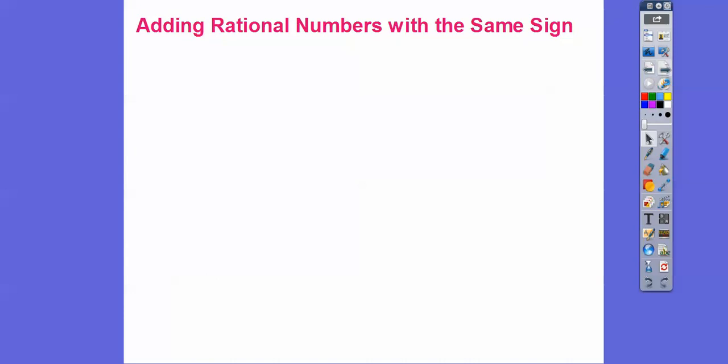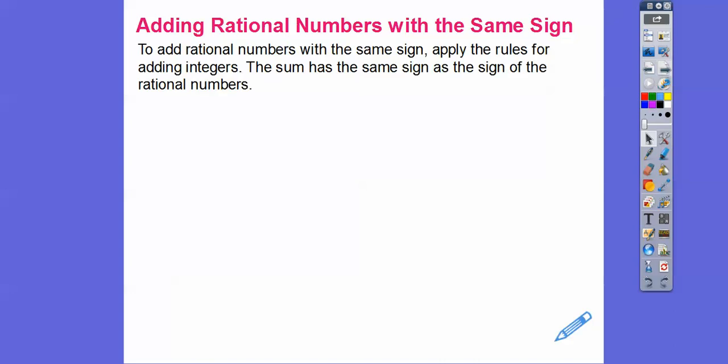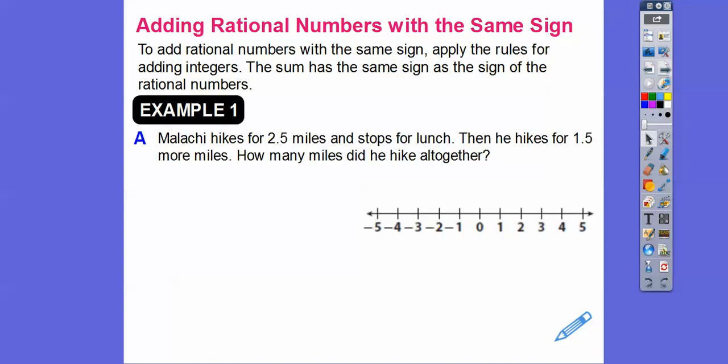Remember, rational numbers are fractions, or in the form of a decimal — a terminating decimal or repeating decimal. So, adding rational numbers that have the same sign: to add rational numbers that have the same sign, apply the rules for adding integers. The sum has the same sign as the sign of the rational number. So if they have the same sign, add them together and then take the sign that they share.